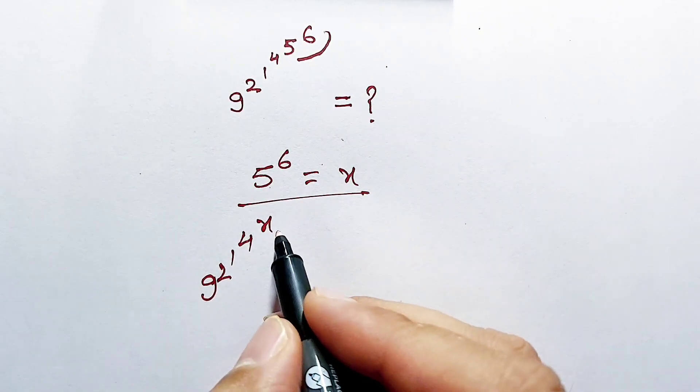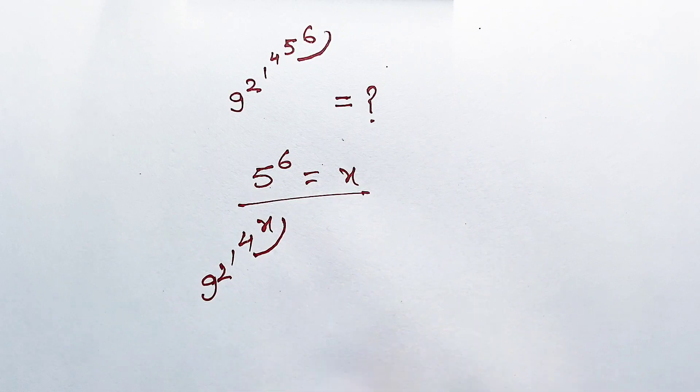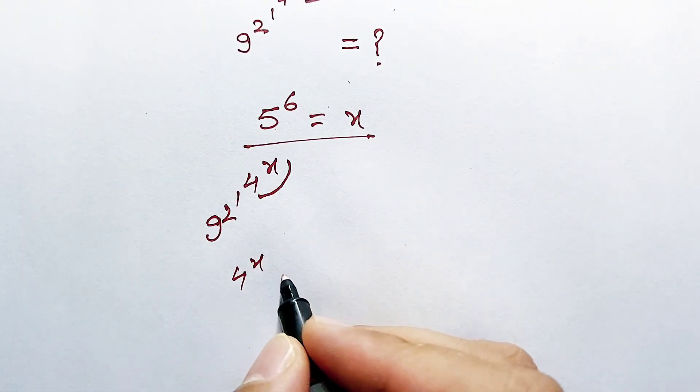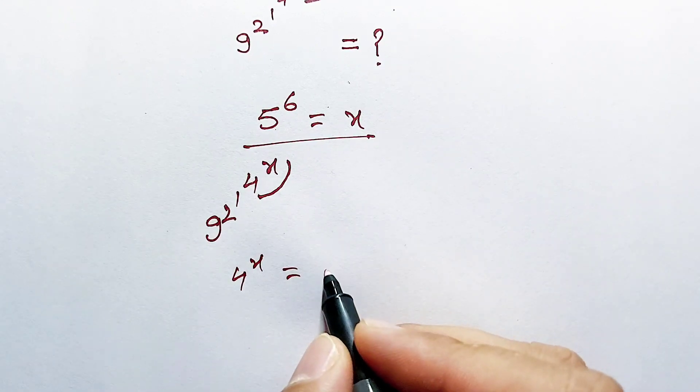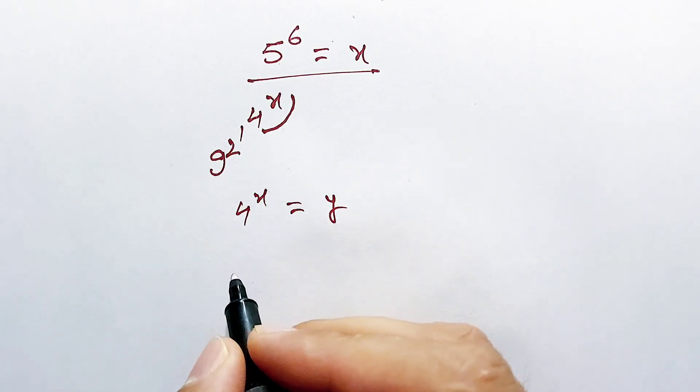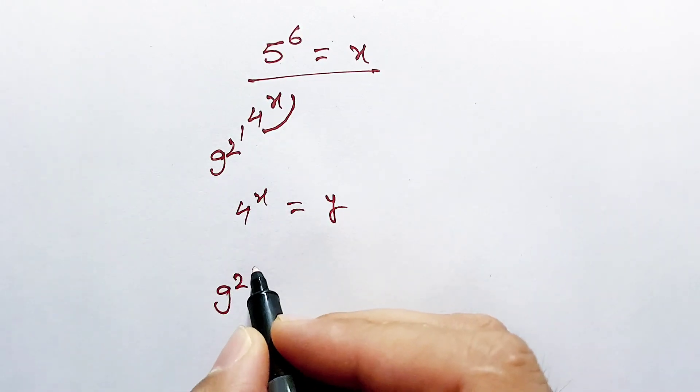Now if we solve this part of the question, 4 power x, let's assume this number is equal to y. Then our question will look like this.